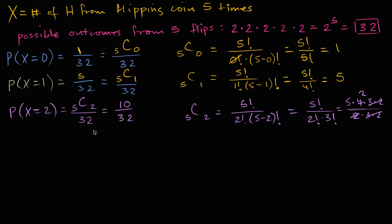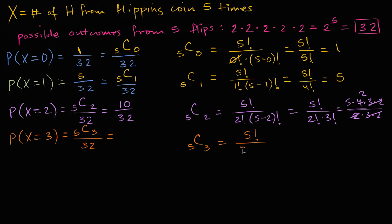What is the probability that X equals three? Out of five flips, we choose three of them to be heads, over 32 equally likely possibilities. Five choose three equals five factorial over three factorial times two factorial — which is exactly what we had before with the three and two swapped — so this also equals 10. P(X=3) = 10/32.